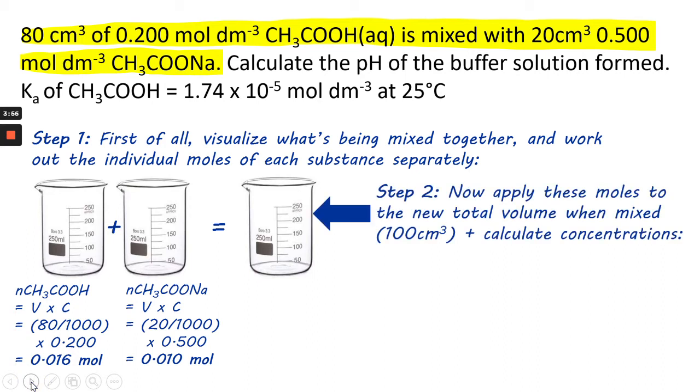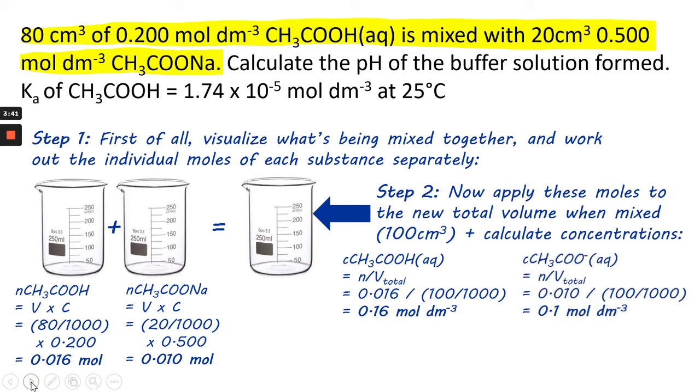Then, what you do is you apply those moles to the new total volume, which is 100 cm³, obviously 80 plus 20 makes 100, and you calculate the individual concentrations in this new volume. So, C equals N over V, and we get 0.16 moles per decimeter cubed, and 0.1 moles per decimeter cubed.